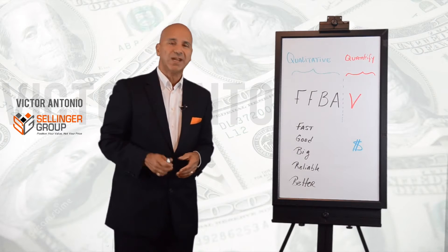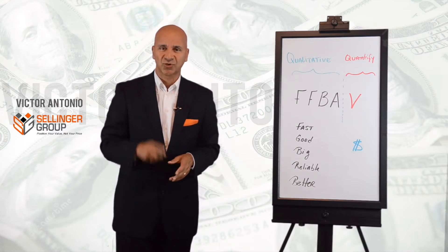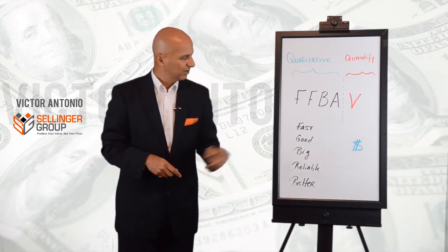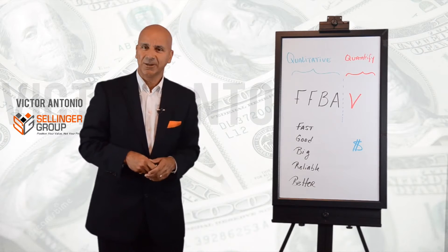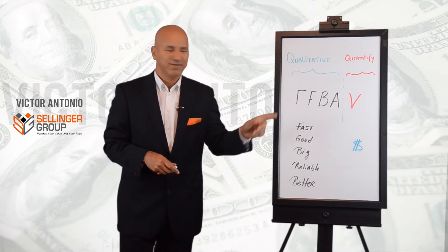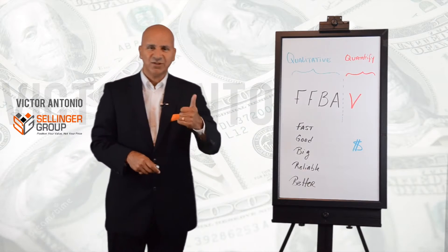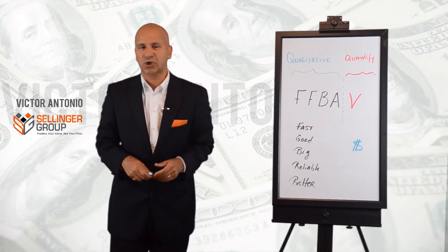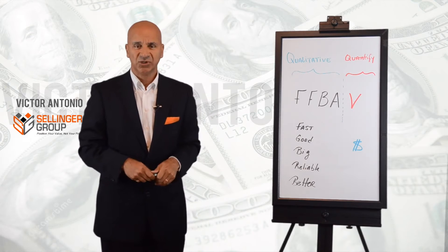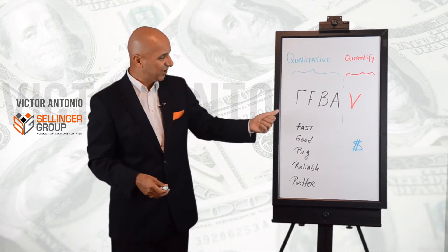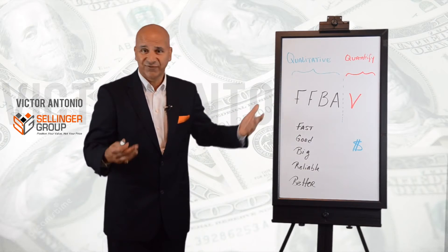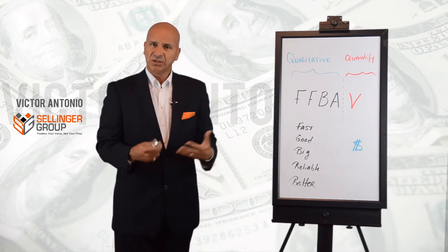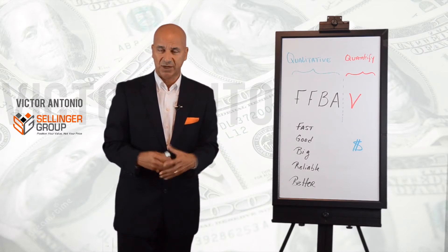If you're the average salesperson, here's what you're doing. You're selling the feature, the functionality, the benefit, and the advantage. Feature, function, benefit, advantage — that's how you've been taught to sell. When you sell the features and the functionality, the benefit, the advantage, these are qualitative measures.